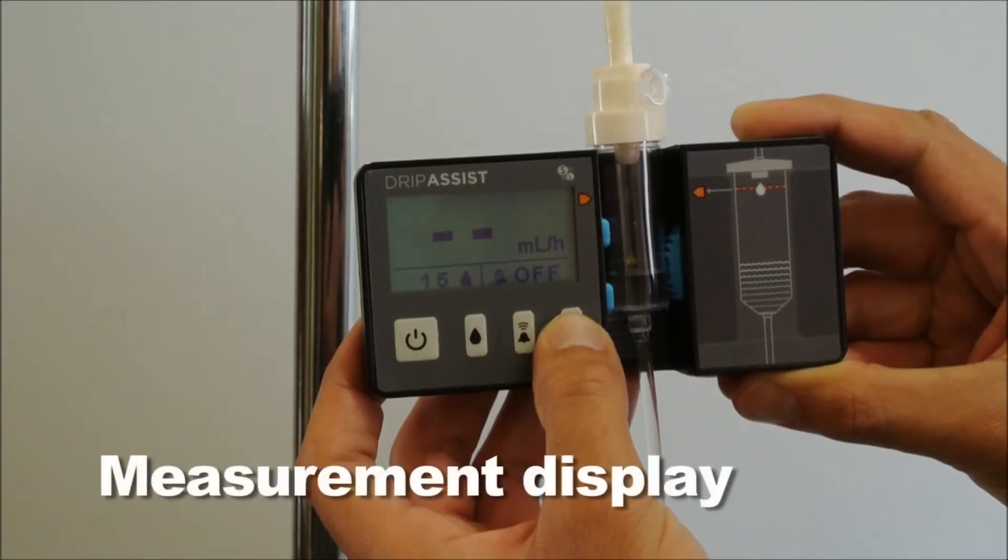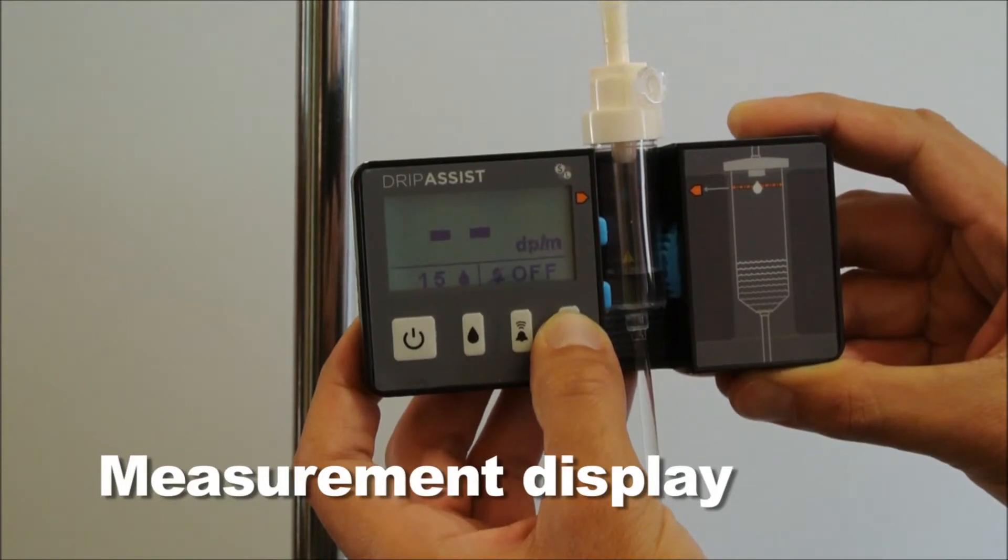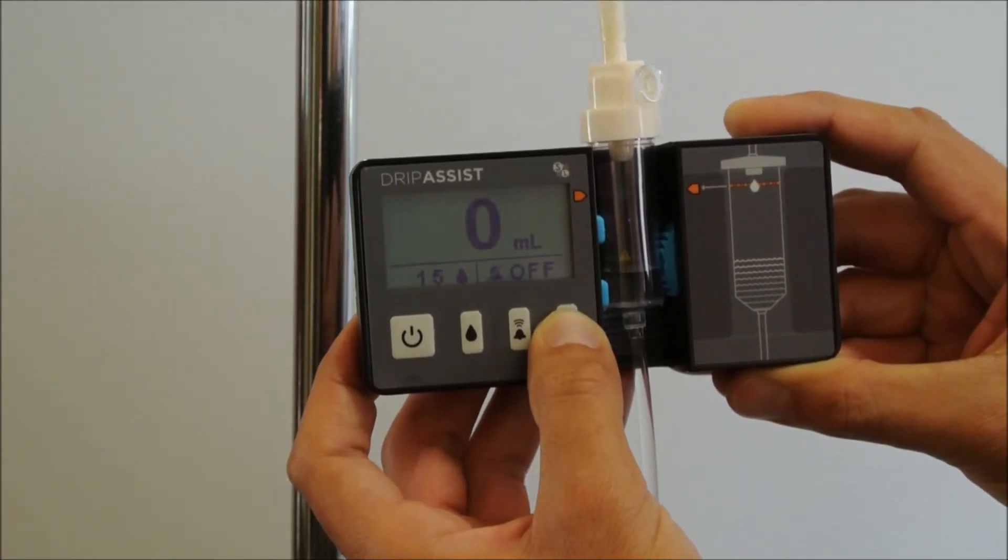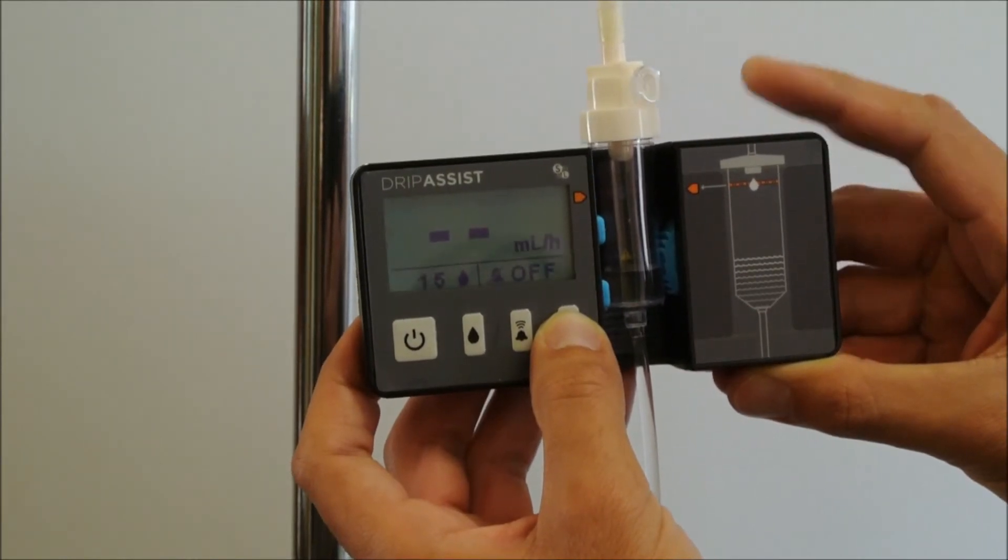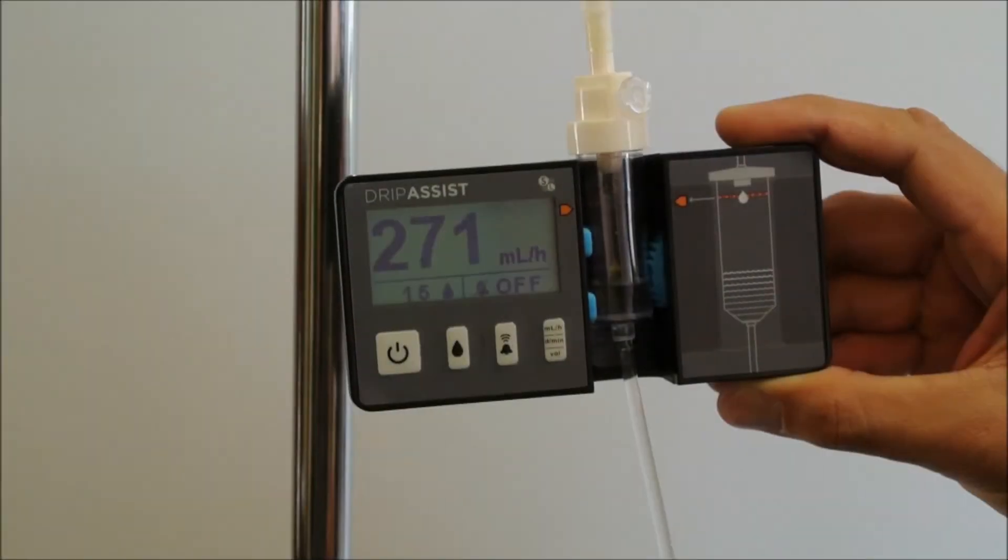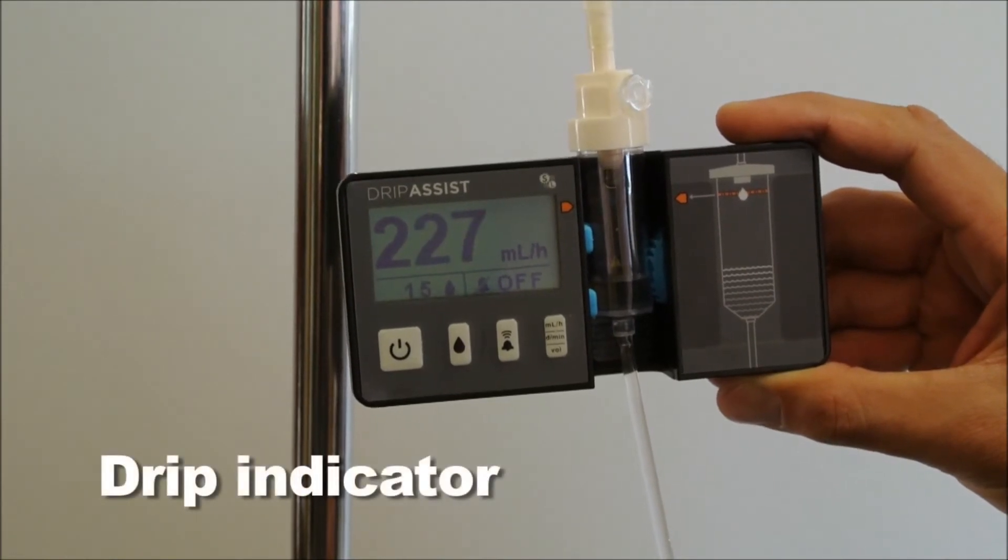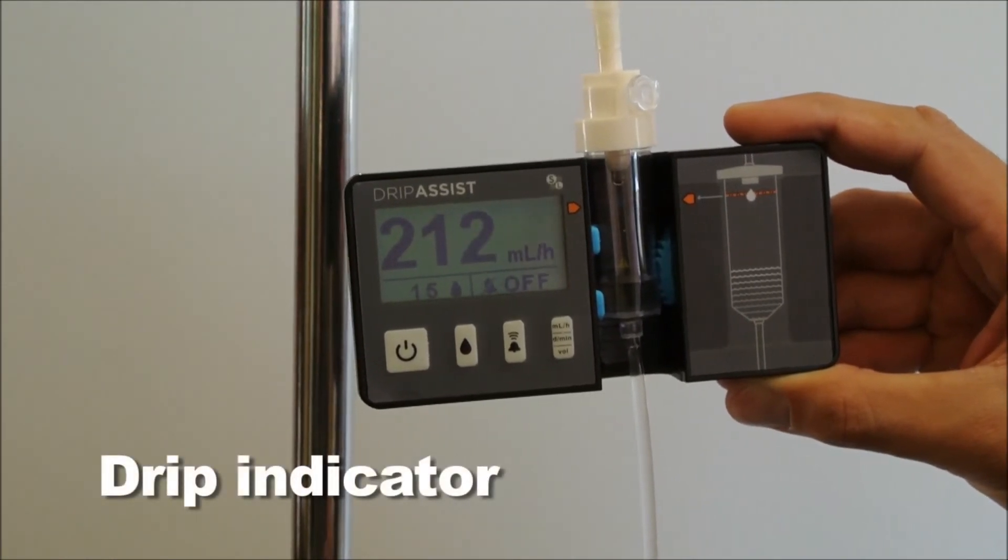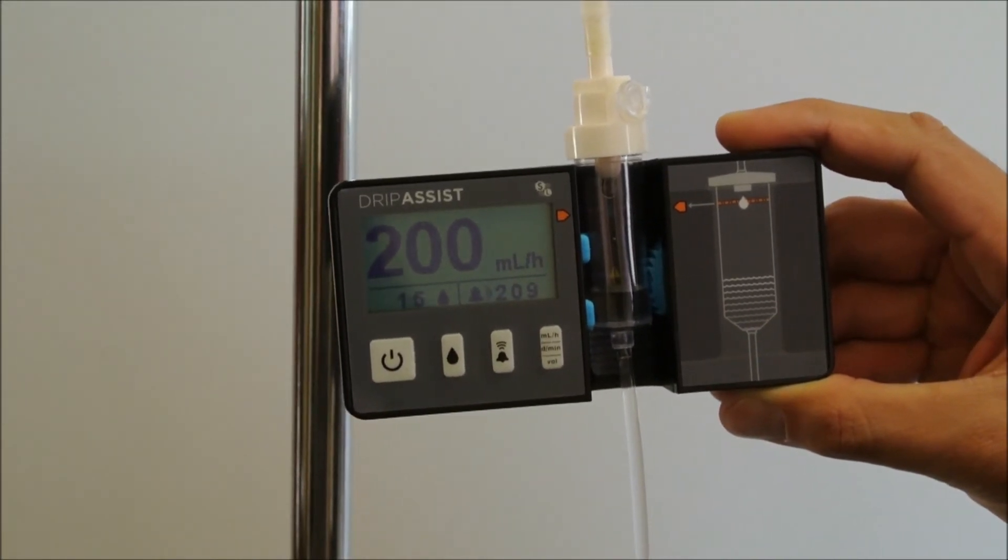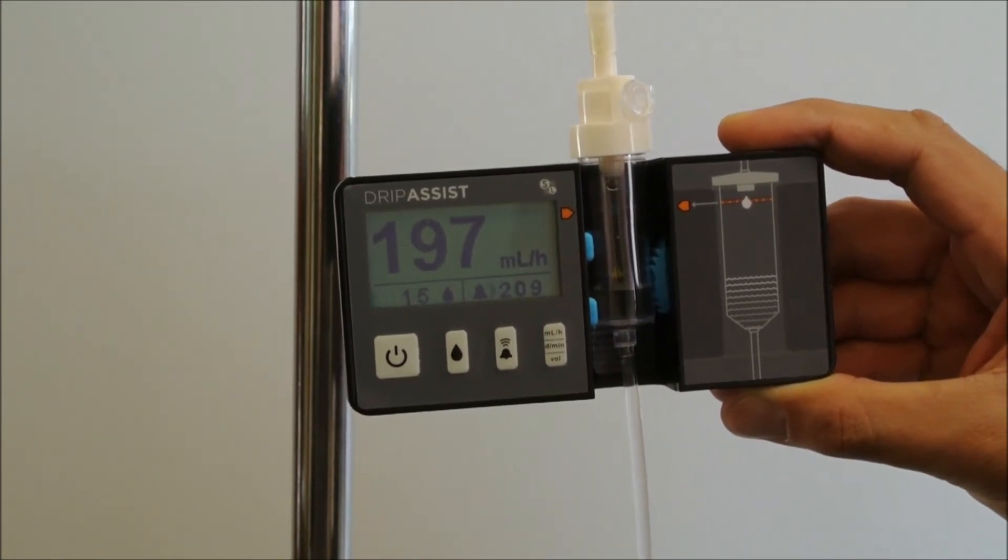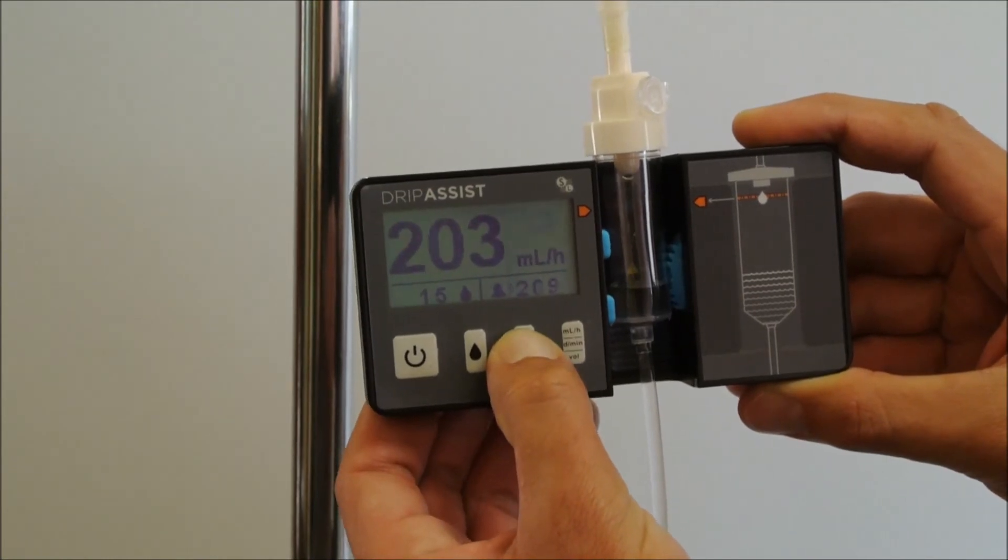You can see the flow rate in either milliliters per hour or drops per minute by using the fourth button. That button will also show you the total volume that has been dispensed. In the top right hand corner of the screen is the drip indicator. That flashes as each drop passes the orange line. That indicator is your feedback that the device is seeing the drops.